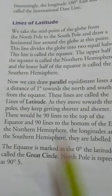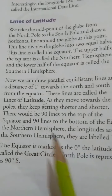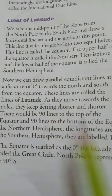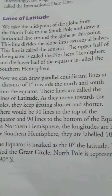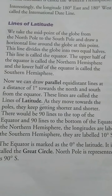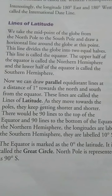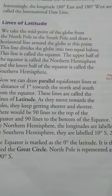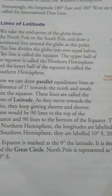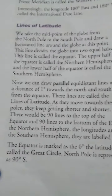As we move towards the poles, the lines keep getting shorter and shorter. There would be 90 lines at the top of the equator and 90 lines at the bottom of the equator.